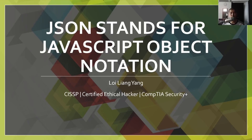JSON stands for JavaScript Object Notation. Breaking it down: JavaScript is a scripting language that changes the features and functions of how users interact with your website. Object Notation is basically just listing down items - as simple as that.